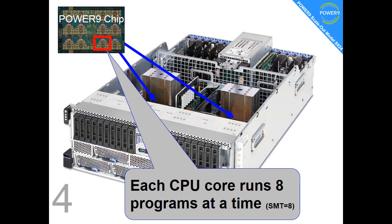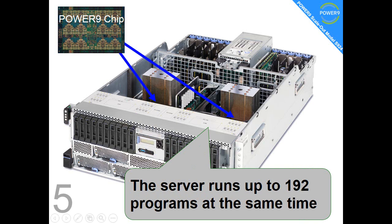Each of those CPU cores can run eight programs at the same time. The technical term for this is symmetric multi-threading equals eight — the competition can only do two. Fact number five: that means the server can run up to 192 programs at the same time.